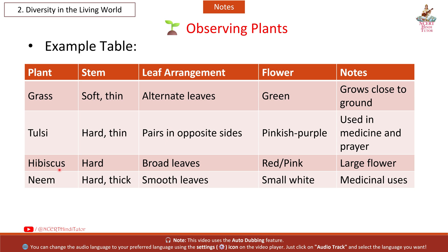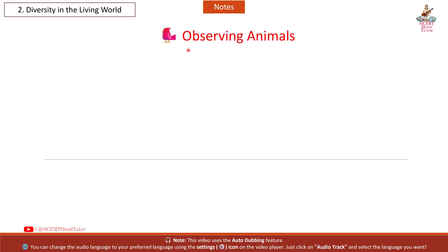Hibiscus: stem hard; leaf arrangement: broad leaves; flower: red or pink; notes: large flower. Neem: stem hard, thick; leaf arrangement: smooth leaves; flower: small, white; notes: medicinal uses.